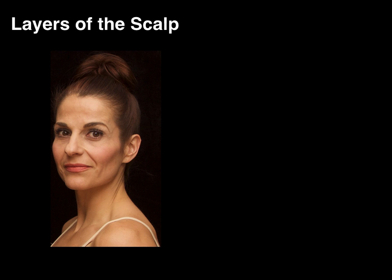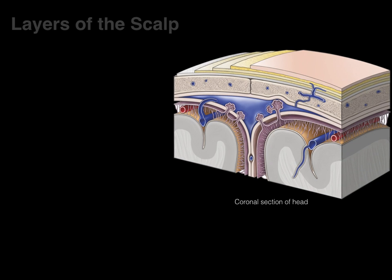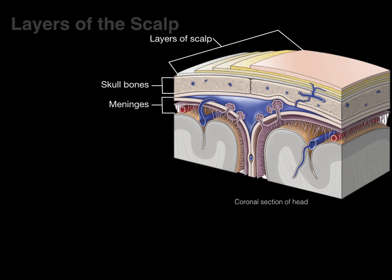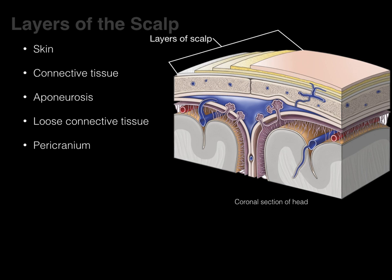The layers of the scalp — we're going to take a coronal section of the head. The image shows the layers of the scalp, the skull bones, the meninges, and the brain. The five layers of the scalp are: skin, connective tissue, aponeurosis, loose connective tissue, and pericranium.